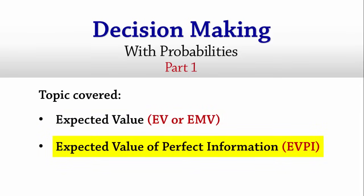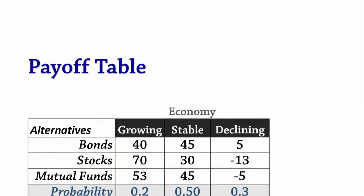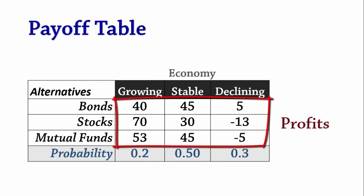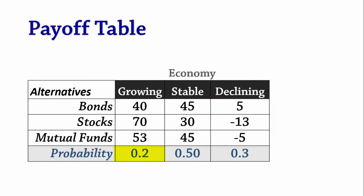We will be using this payoff table where payoffs are profits and the probabilities of the states of nature are 0.2, 0.5, and 0.3 respectively.